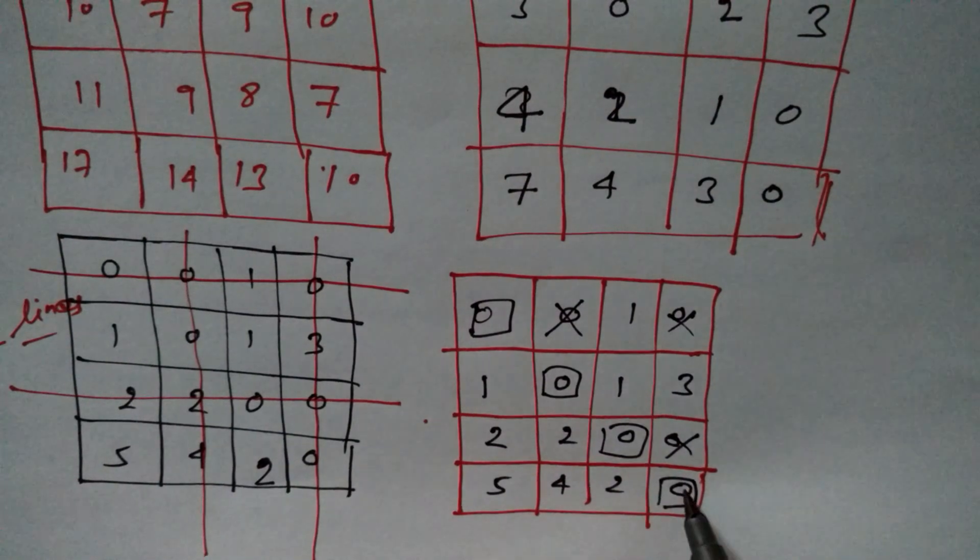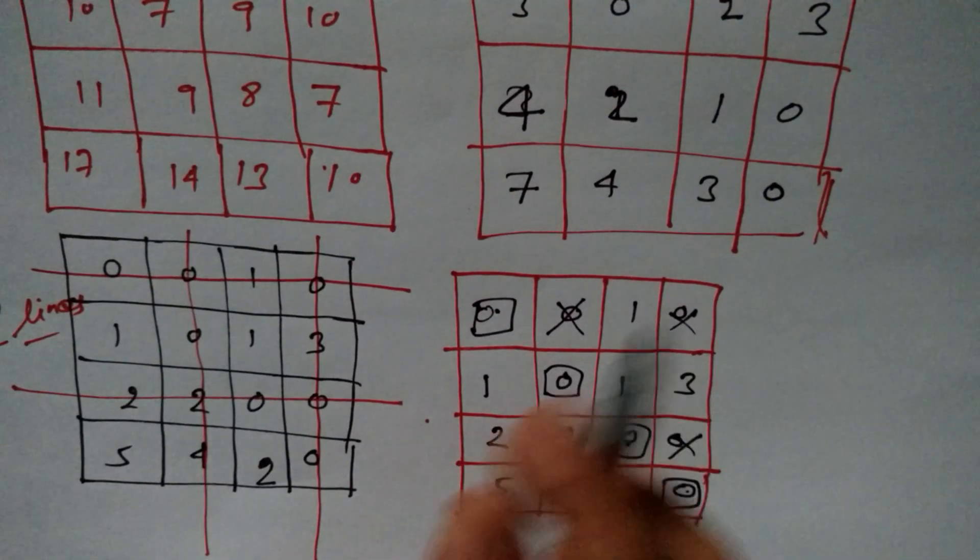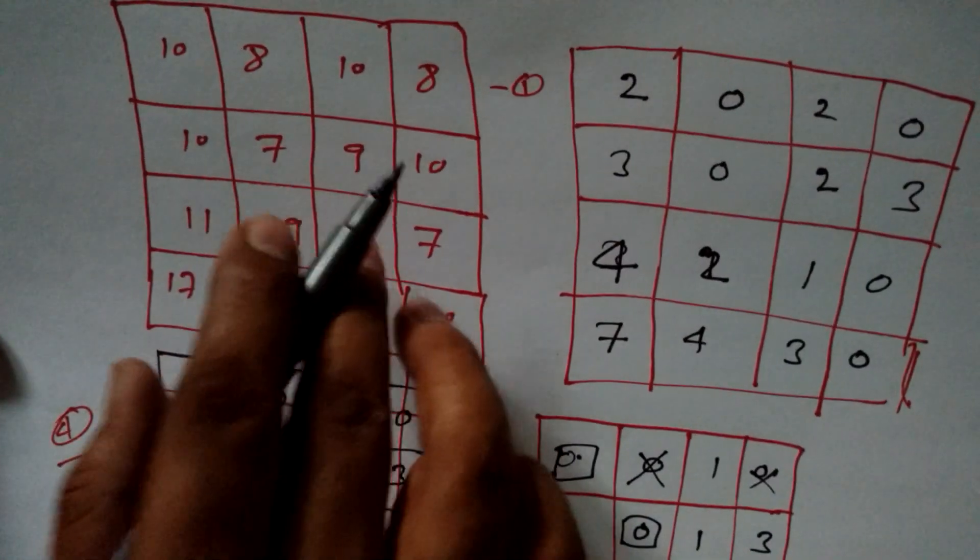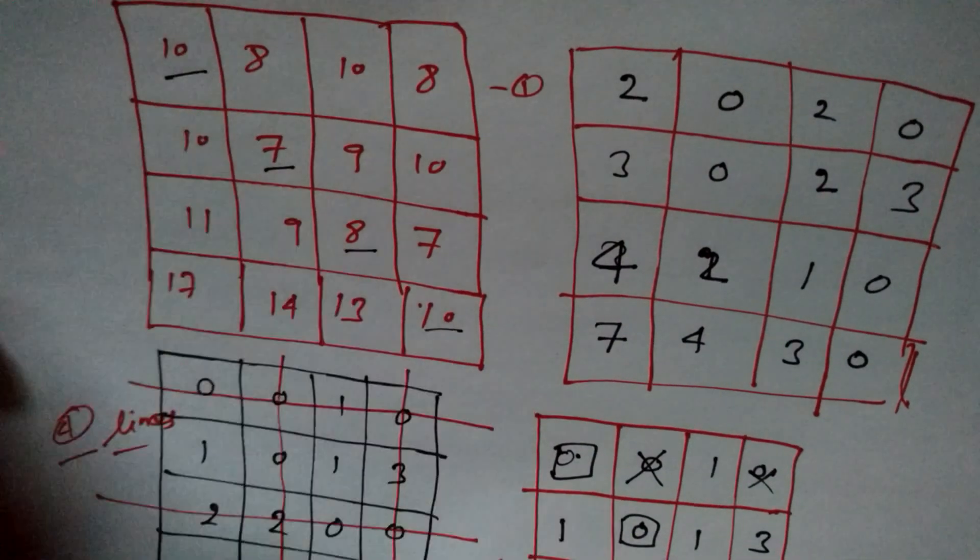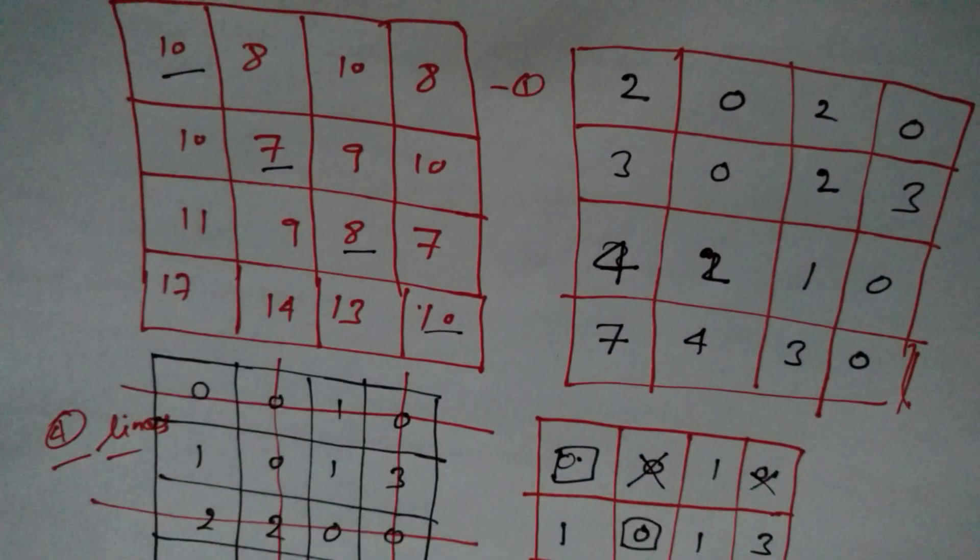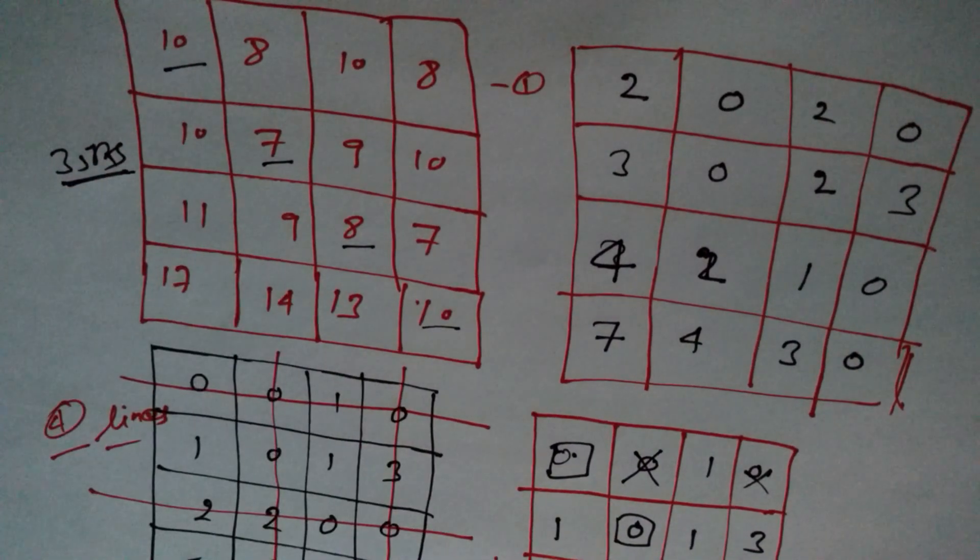So, here, this one, this one and this one, all these four values, we have to write, but we have to take values from the main table, just important thing. So, we have main table 10 plus 8 plus 7 plus 10, 35. So, the optimal solution, I mean, transportation cost is 35 rupees.